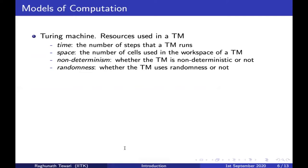In this course we will be looking at Turing machines as one of our models of computation. What are the resources used in a Turing machine? Time is a resource — it is the number of steps that a Turing machine takes to run on its input. Space can also be a resource: it is the number of cells used by the Turing machine in its workspace.